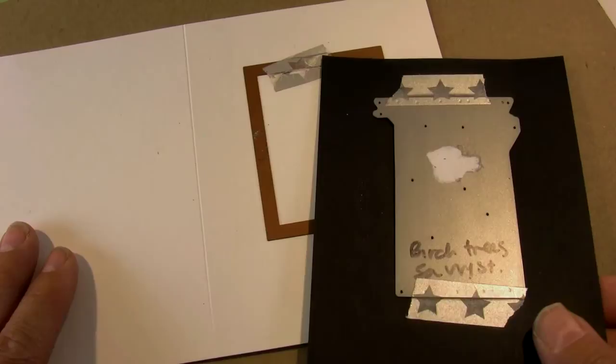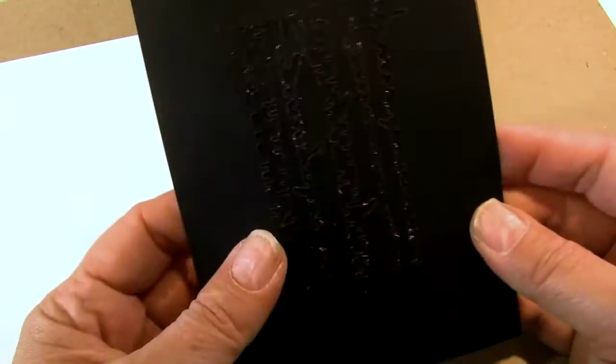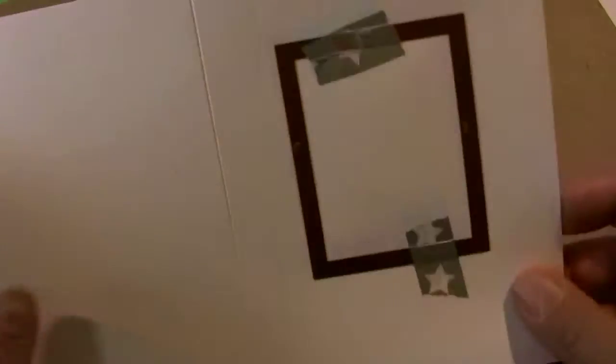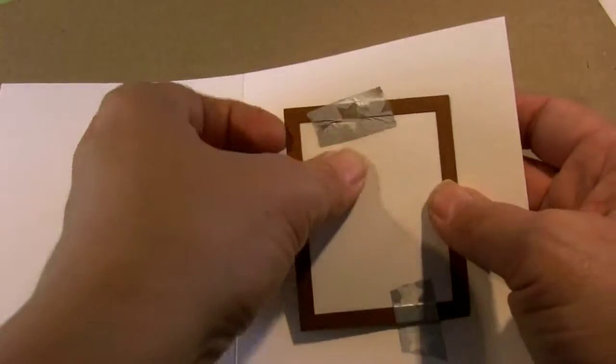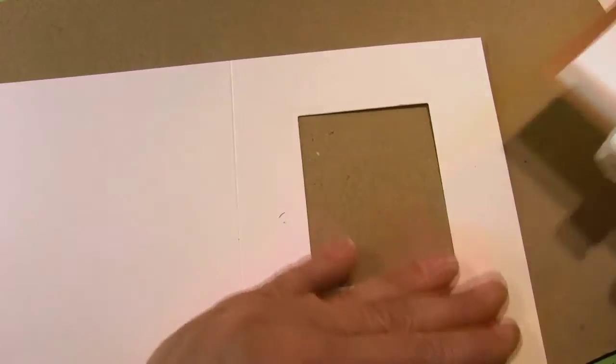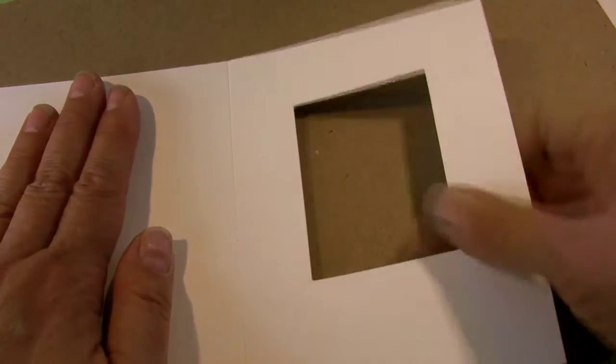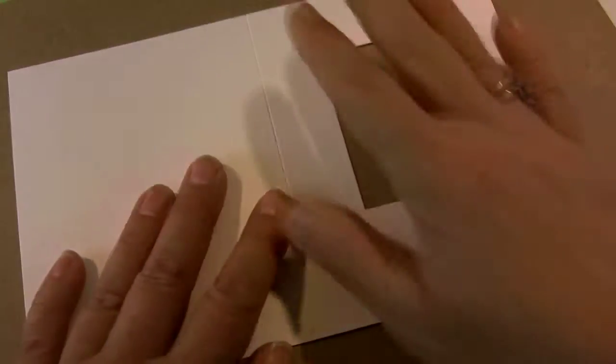I'm going to be using this Savvy Stamps birch die that I've already got die-trimmed out and I've also got my frame on the card front. So this is punched straight into the piece of cardstock. This is only going to work with heavy-duty cardstock - if you use the really thin stuff you may have to do some adaptations that I'll talk about as I go.